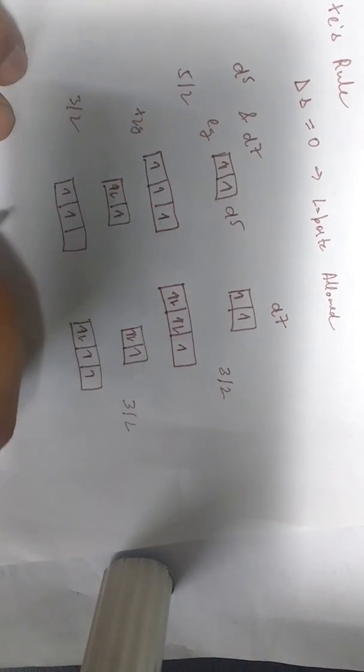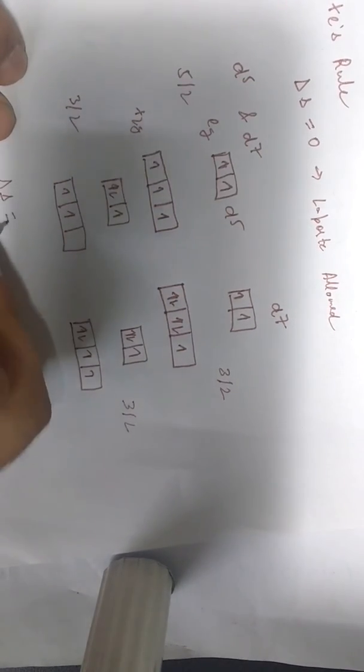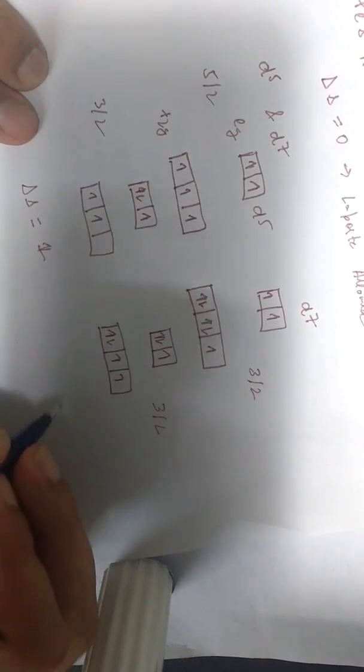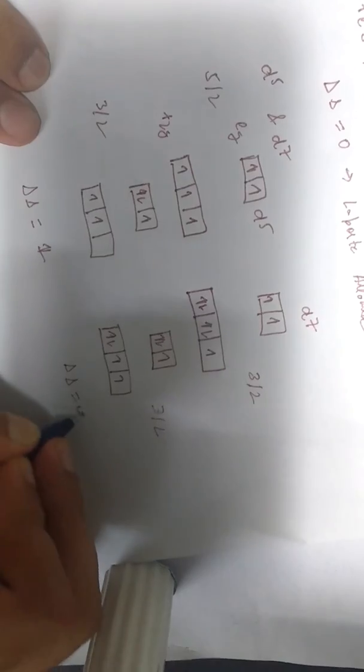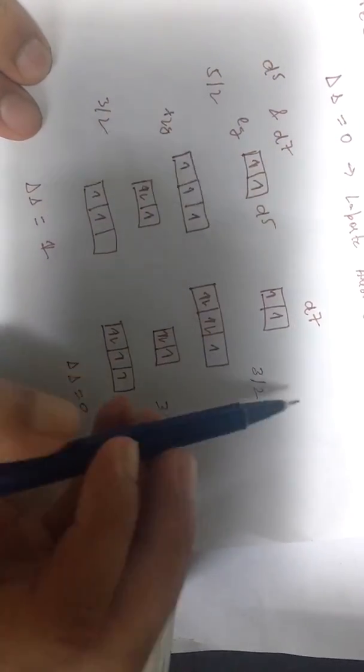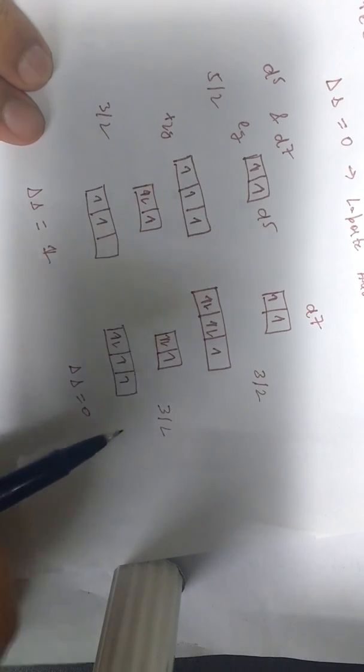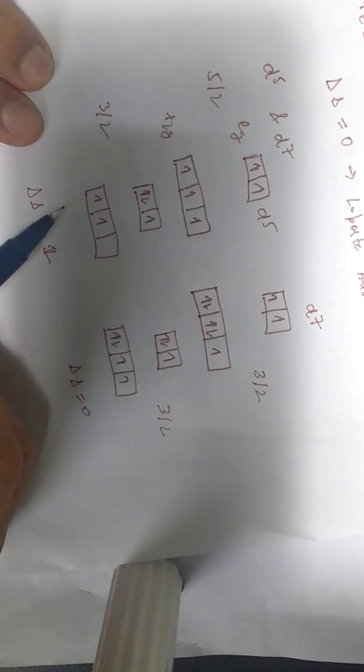So if you see, the spin change over here is equal to 1, while the spin change over here is equal to 0. So you can say for high spin transition metals, the D7 configuration is Laporte allowed, whereas the D5 configuration is Laporte forbidden for DD transitions.